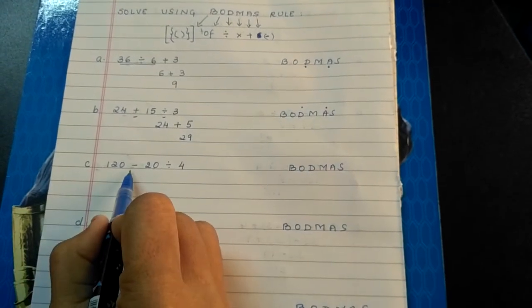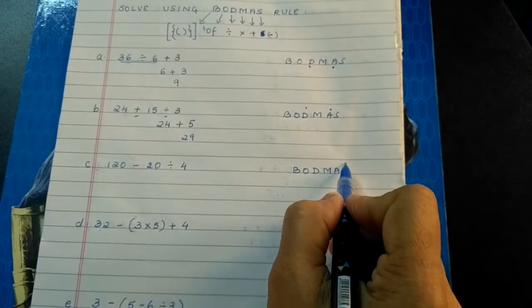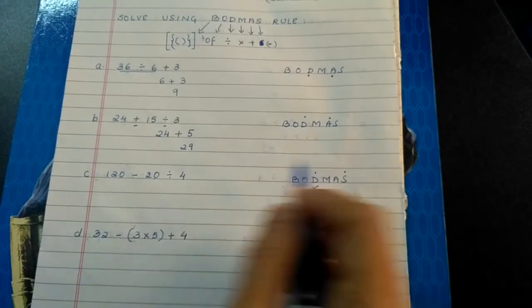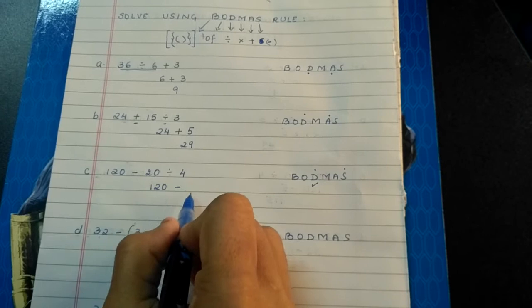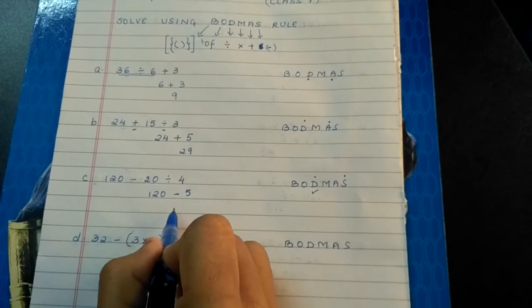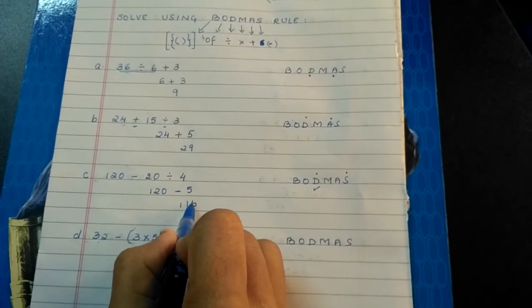Next, subtraction is involved and division is involved. But what comes first? Division. So 120 minus 20 divided by 4 is 5. 120 minus 5 is 115.